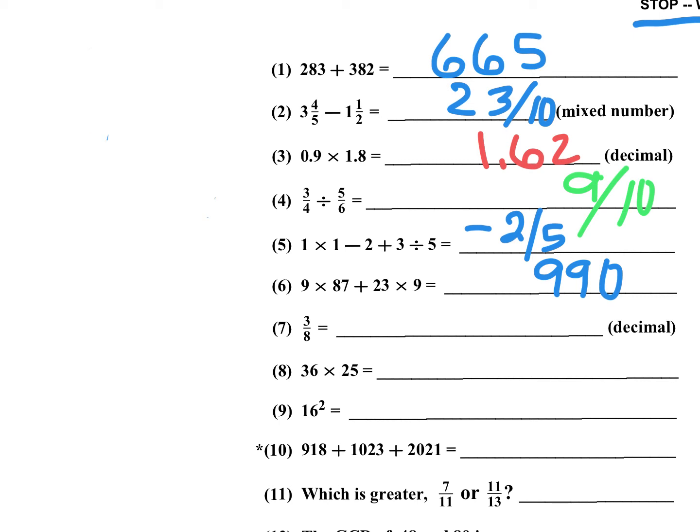3 eighths as a decimal. I would recommend that you memorize that. That is 0.375. And if you want to remember, 3 eighths is between 2 eighths and 4 eighths. Well, 2 eighths is 1 fourth, and 4 eighths is 1 half. So the average of those two would be 3 eighths, which is right in the middle. It would be exactly 0.375.